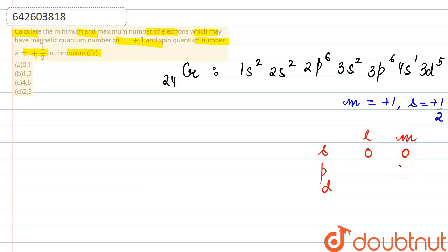The value of l for p subshell is 1, so m value will vary from plus 1 to minus 1. So I can take the values here: minus 1, 0, and plus 1.